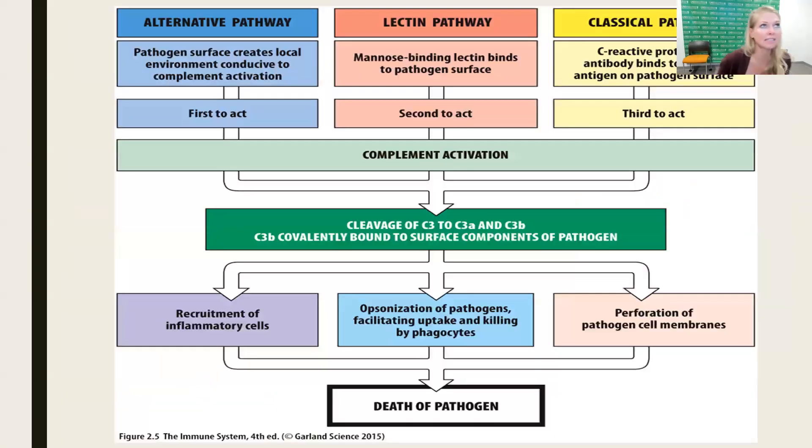Here is that diagram. Where we had with the alternative pathway, it was the pathogen surface that initiated that first C3 to become hydrolyzed, in the lectin pathway it's going to be binding of mannose-binding lectin on the surface of the pathogen. And then eventually, when we get to the adaptive immune system, we're going to look at antibody, but C-reactive protein can also activate the classical pathway of complement activation, which C-reactive protein was an acute phase protein that we saw a couple slides ago.